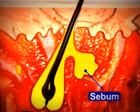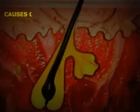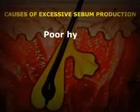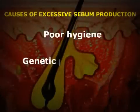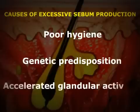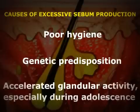Overproduction of sebum is related to the disease called acne, or commonly pimples. Sebum may collect excessively as a result of poor hygiene, genetic predisposition, or accelerated glandular activity, especially during adolescence.